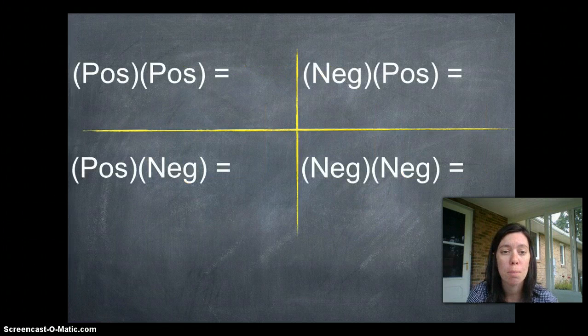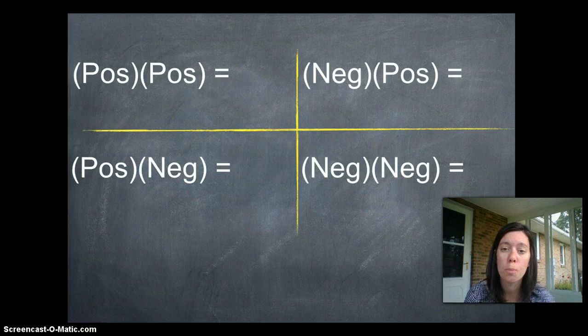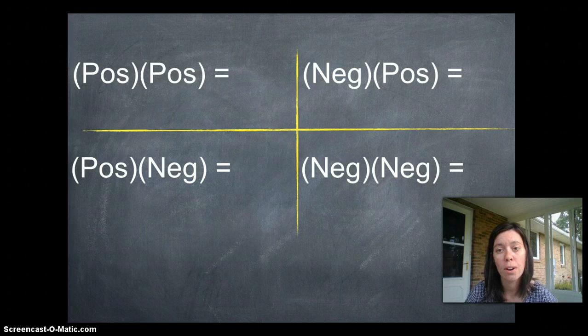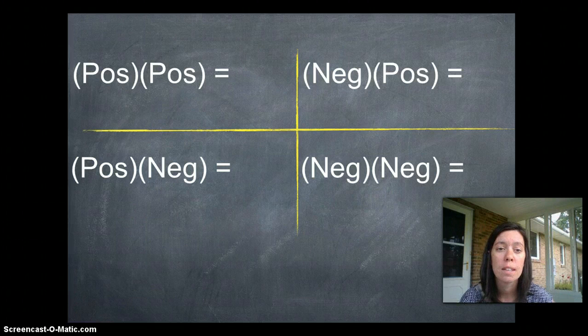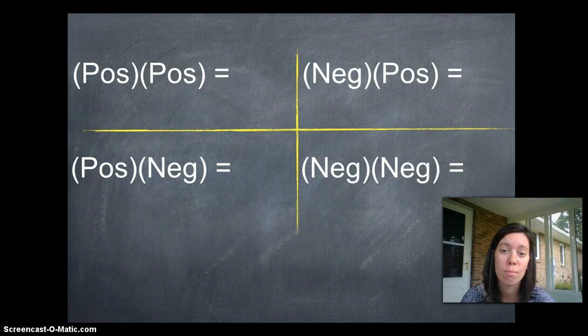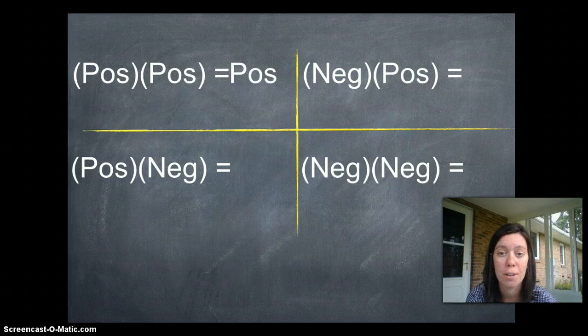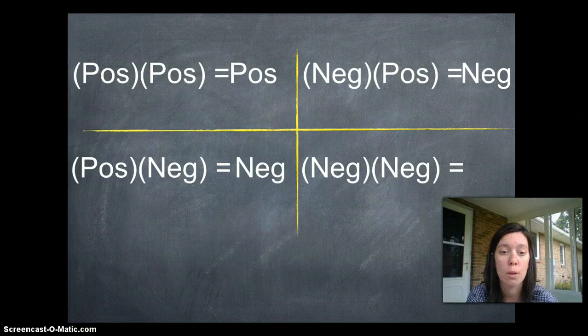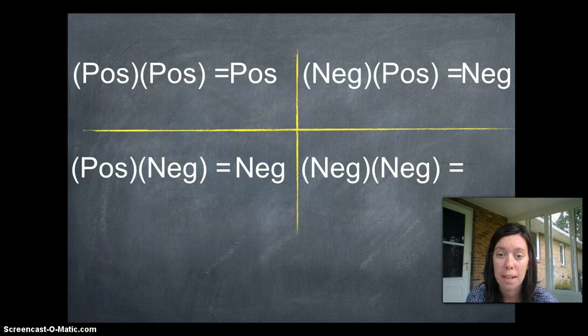So when we're multiplying, you could multiply two positives, two negatives, or a negative and a positive together, and the sign of your answer will change depending on which one of these you're doing. If it's two positives multiplied together, you get a positive answer. A negative and a positive give you a negative answer, no matter which one comes first. And two negatives make a positive.